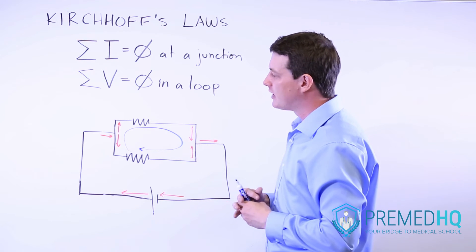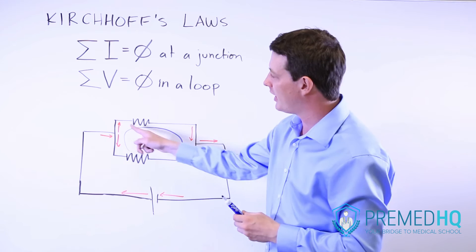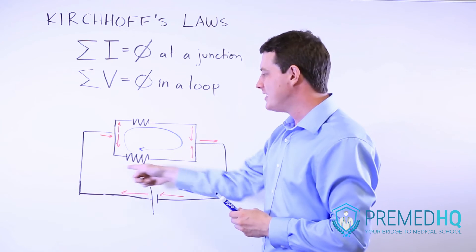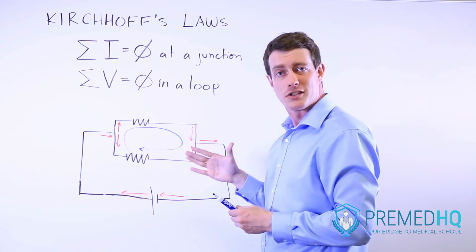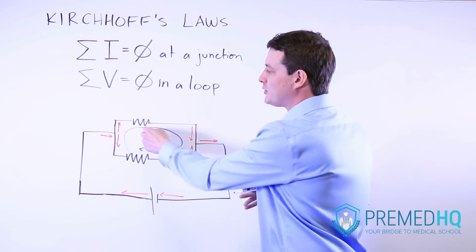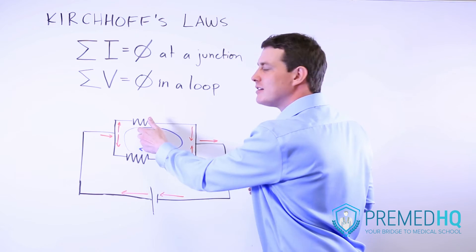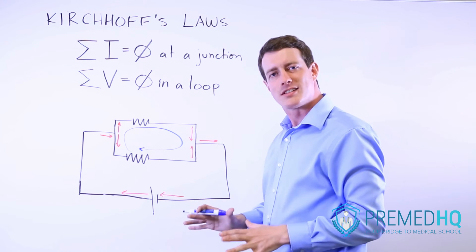...the major thing to realize is that because this is a loop and this voltage drop goes with the loop, this voltage drop goes against the direction of the loop. Realize that the voltage drop across two parallel components of a circuit will always be the same.